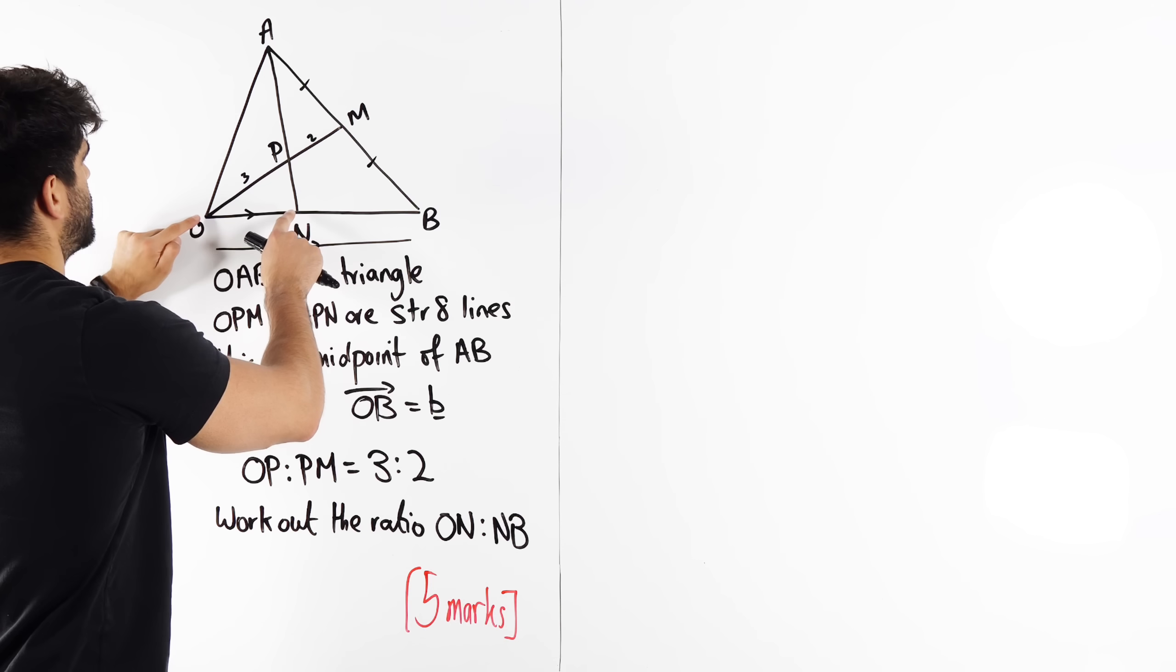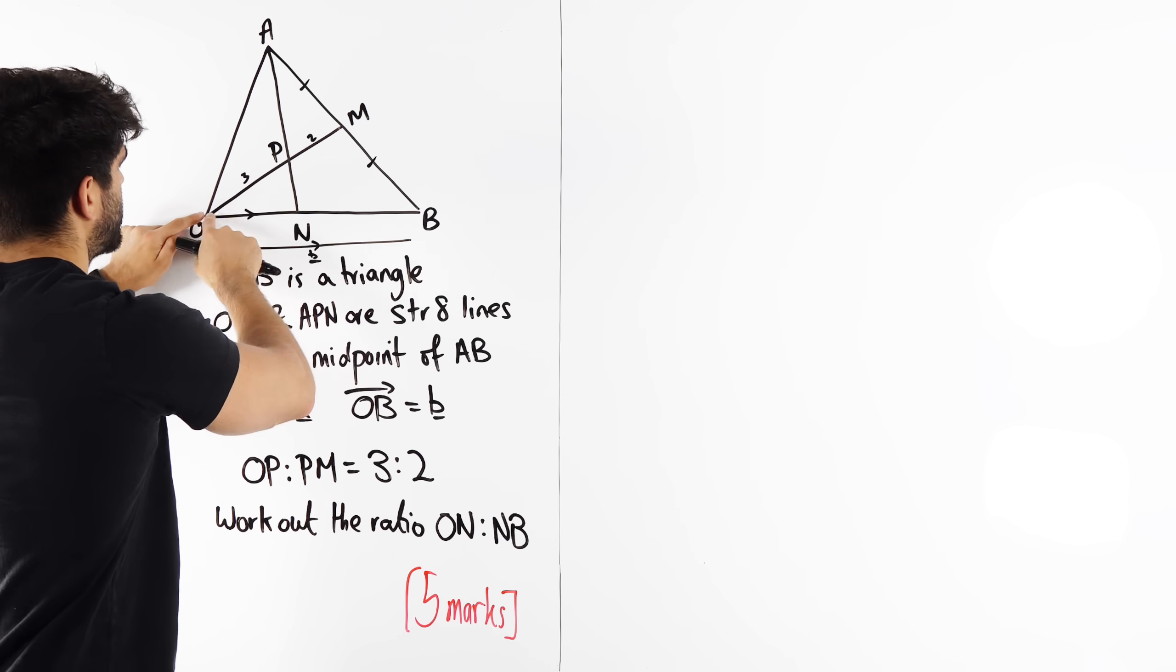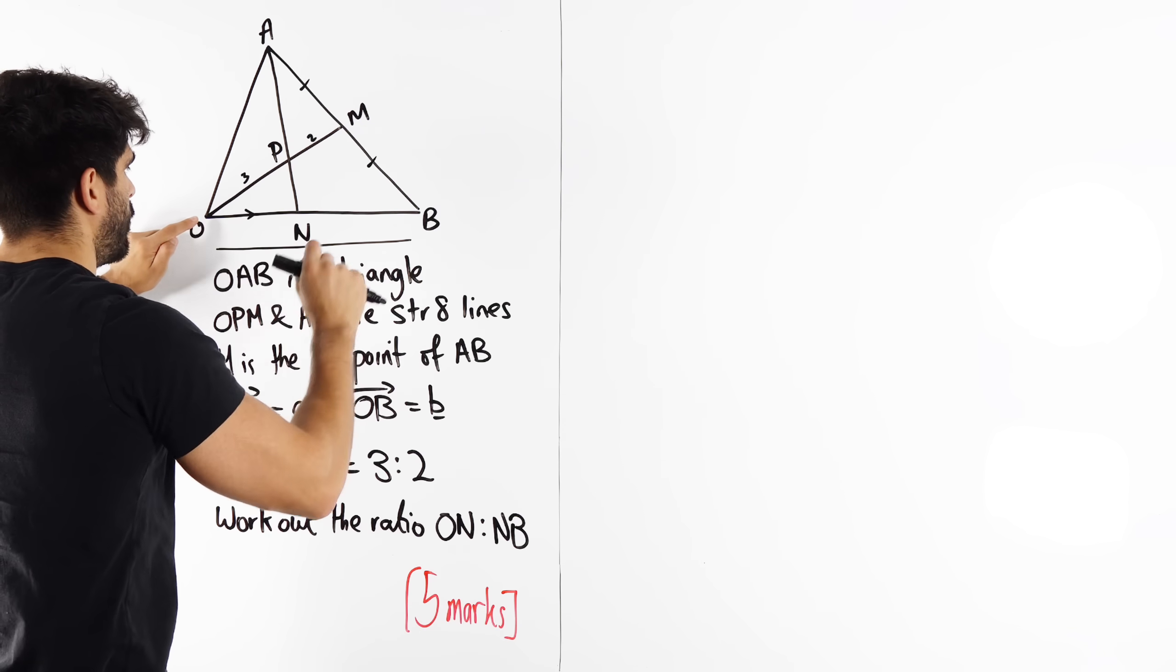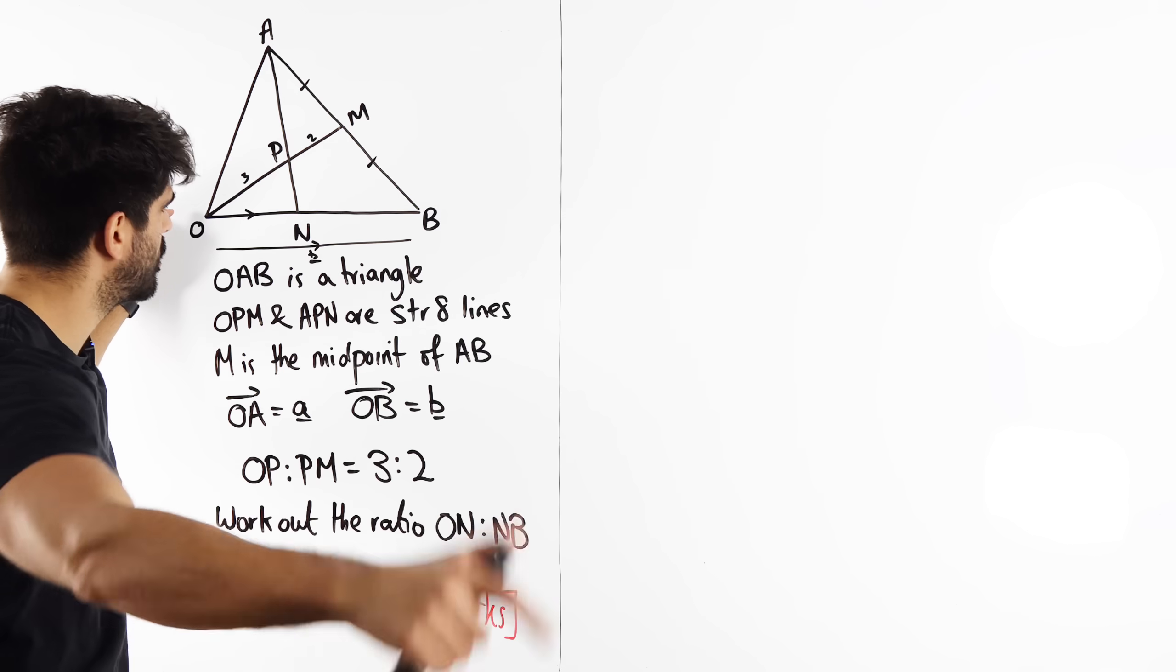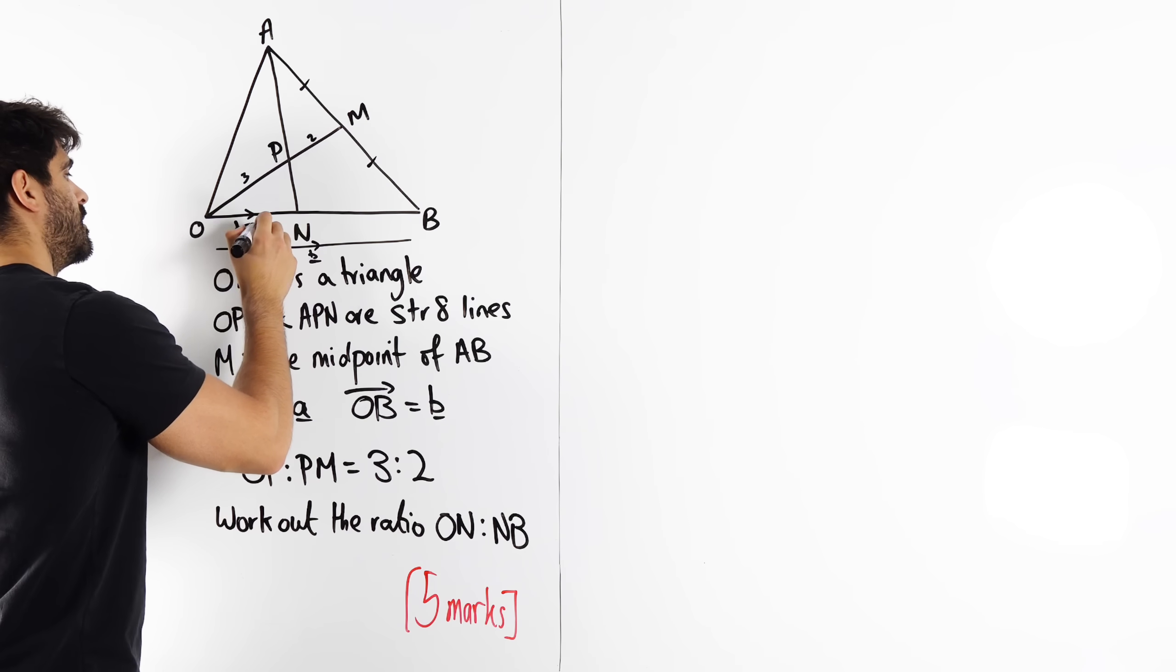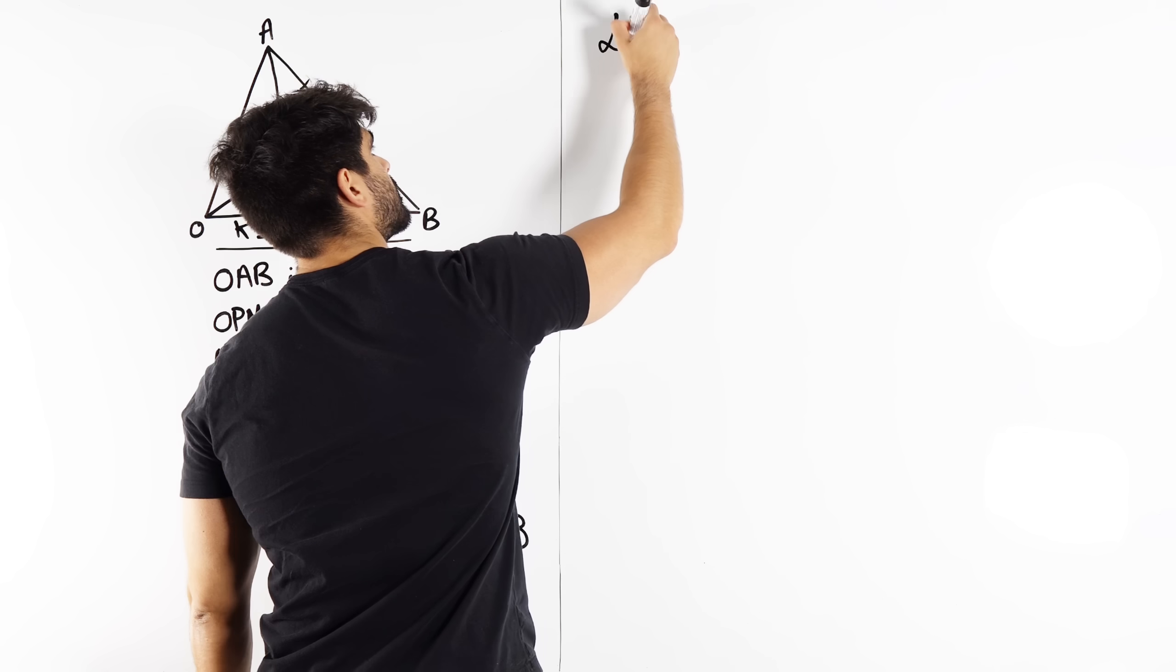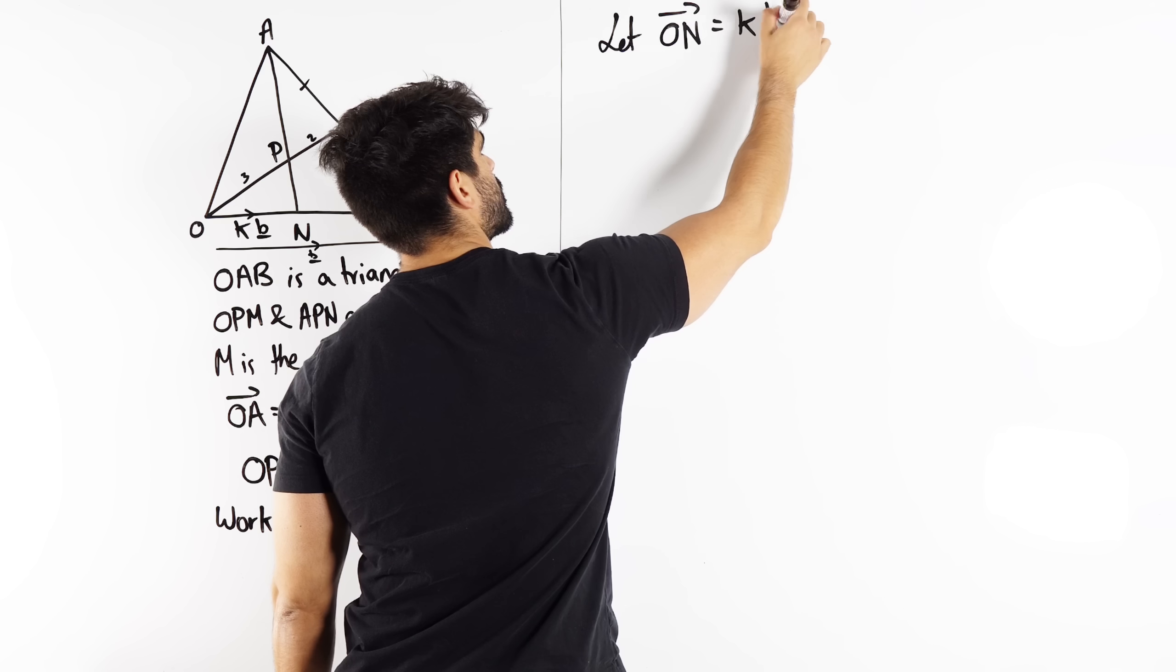Now think about it. This here, will it be smaller than B or will it be bigger than B? Smaller because this is O to B, which is B, so this vector here would be smaller. It's a fraction of B. But we don't know what that fraction is, that's what we're trying to find out. So let's call it K. This is KB. So we're going to let ON equal some fraction of B.